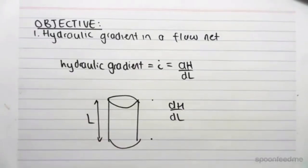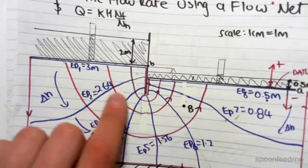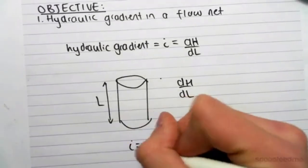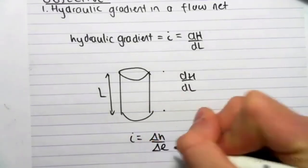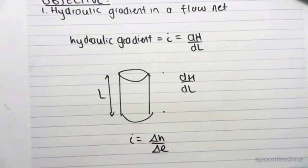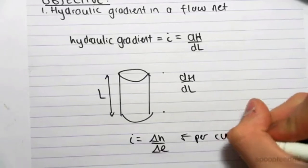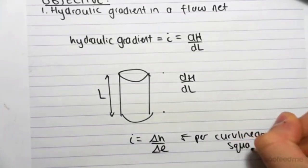But for a flow net, it's not so simple. We don't have such simple shapes. We've got these curvilinear squares, and we've got funny stuff going on. So the formula is the same. The hydraulic gradient is equal to the change in little h over the change in little l, and this is per curvilinear square.